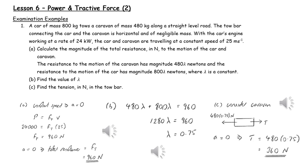By considering only the caravan and the fact there is zero acceleration, we can realize that the tension in the tow bar must equal the resistance on the caravan.